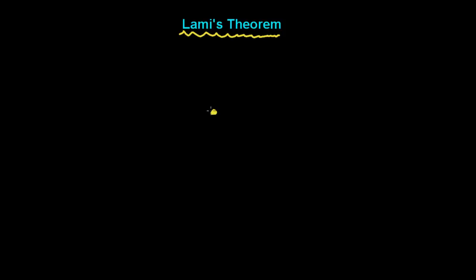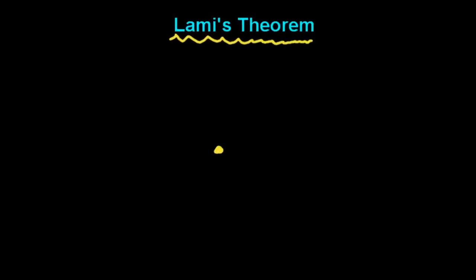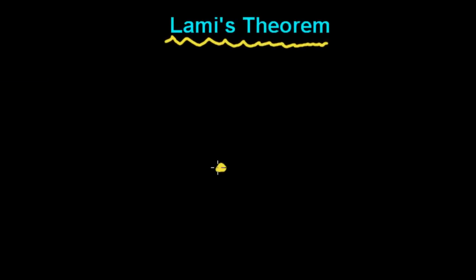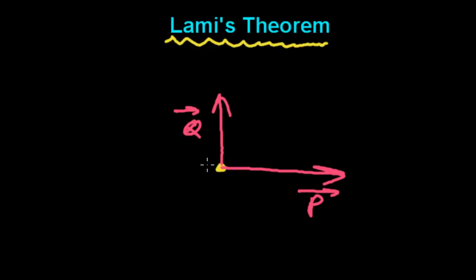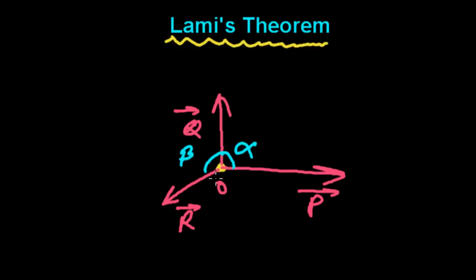acting at a point — forces acting towards the point or away from the point — let's say force P, force Q, and force R. Here are three forces P, Q, and R going away from point O. Let's say the angle opposite to R is alpha, the angle opposite to P is beta,